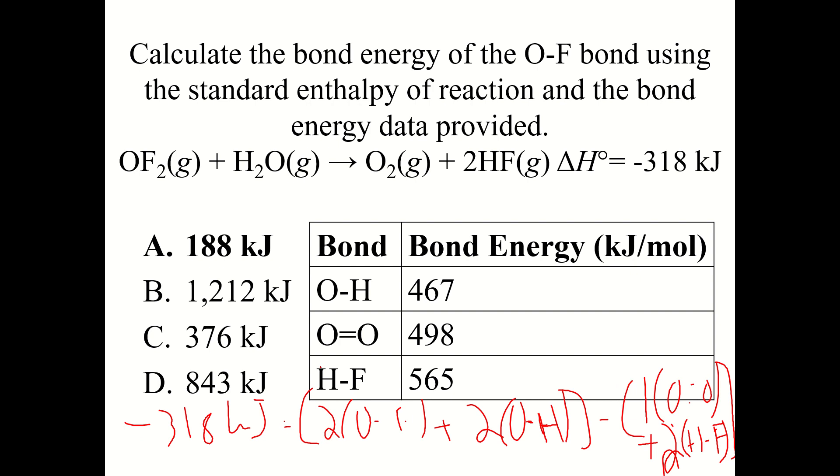Minus one oxygen to oxygen double bond, plus two hydrogen to fluorine single bonds. And then you just solve, this is the unknown that you're solving for, and you should have gotten A, 188 kilojoules.